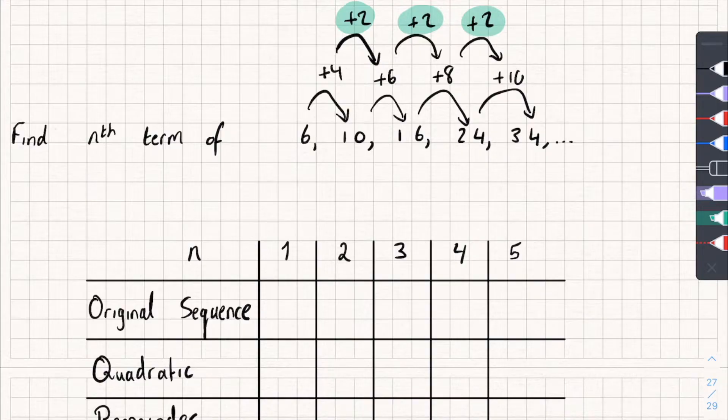So the second difference is plus 2. Now, if you have a quadratic sequence, it's always going to have an n squared term in it. So, the way we find the coefficient, the number in front of that n squared in the nth term, is we take our common difference, in this case it's plus 2, and we divide it by 2. If the second difference was, I don't know, plus 6, we would half it, divide it by 2, and get 3. But in this case it's plus 2, so we're going to half it, and we get 1.